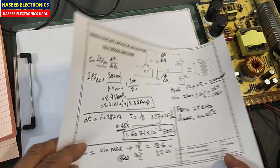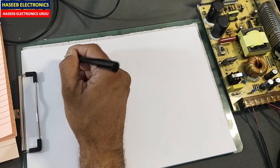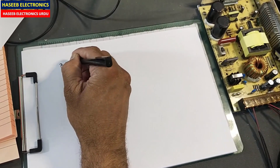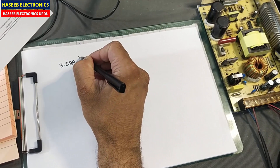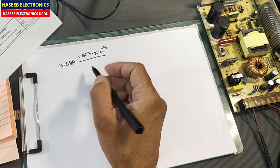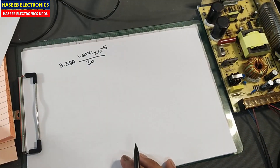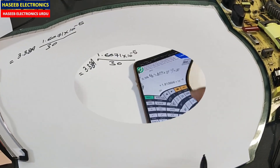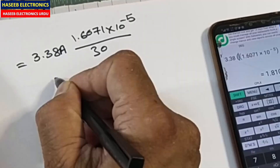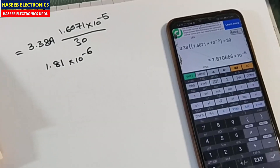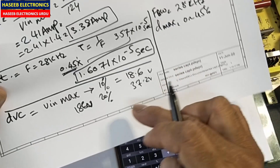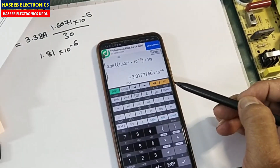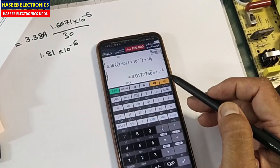Let's put the values into the formula. I-peak-primary is 3.38 amperes, time is 1.6071 × 10⁻⁵ seconds, and the allowed charging voltage is 30 volts. This gives C = 1.81 × 10⁻⁶ farads, approximately 1.81 microfarads. If we use the minimum voltage of 18 volts instead, we would need a 3 microfarad capacitor — too large — though it would reduce power losses. We need to balance capacitor size against power dissipation.